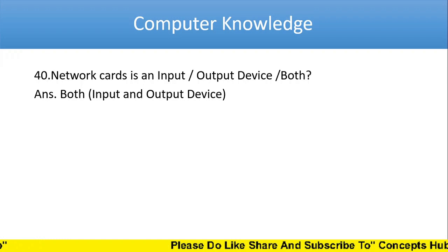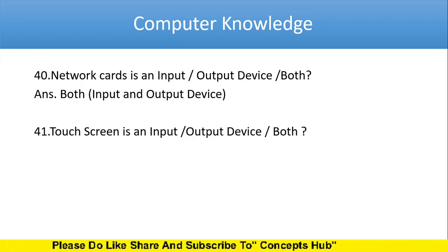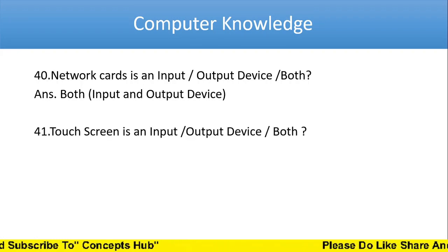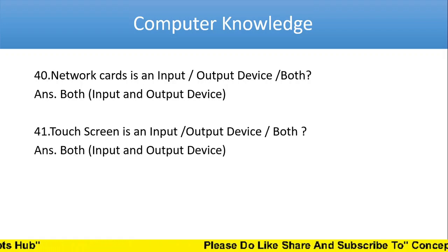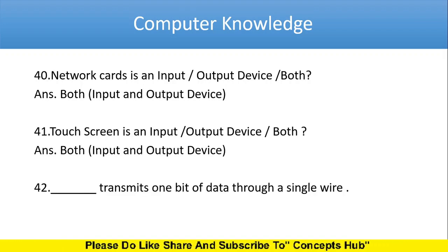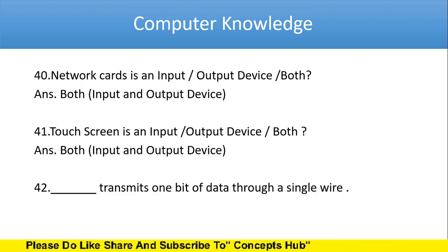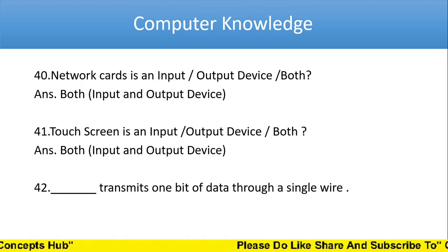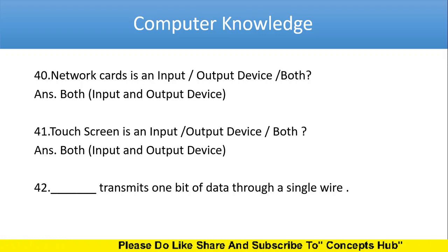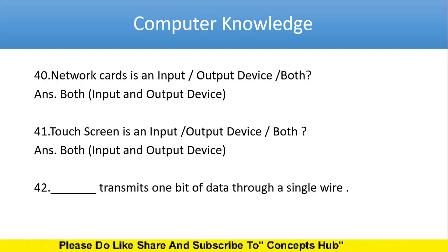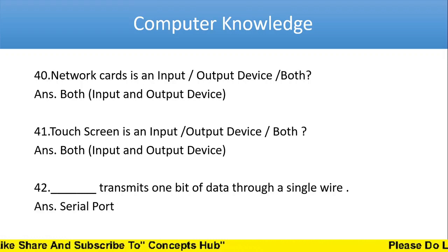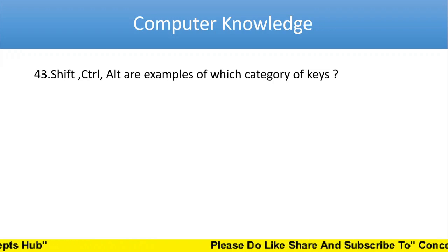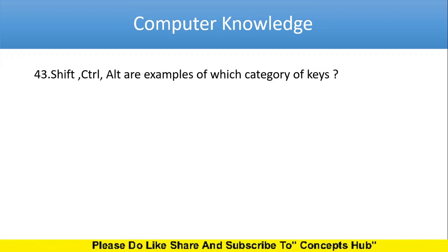The answer is both — input device and output device. Next: touch screen is an input device or output device or both? The answer is both — input device and output device. Next: dash transmits one bit of data through a single wire. The answer is serial port. Next question: Shift, Ctrl, Alt are examples of which category of keys? These are modifier keys.